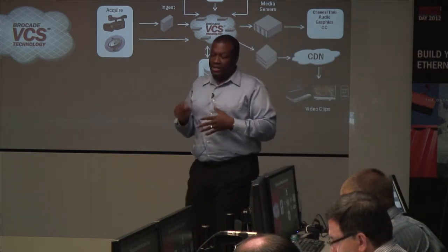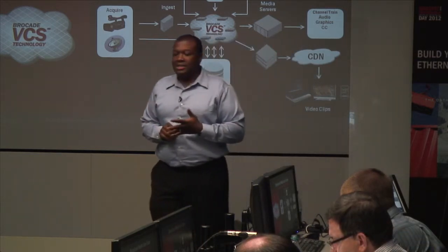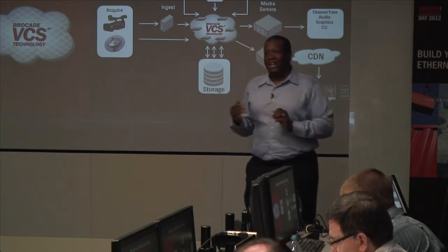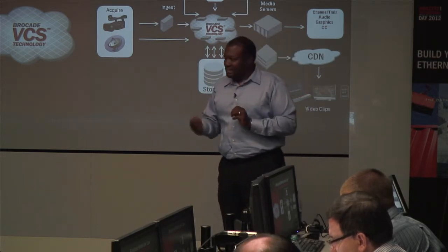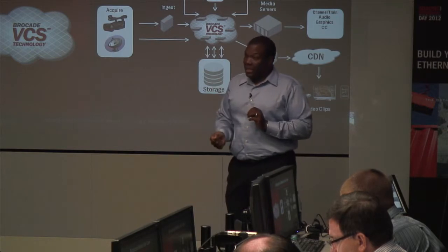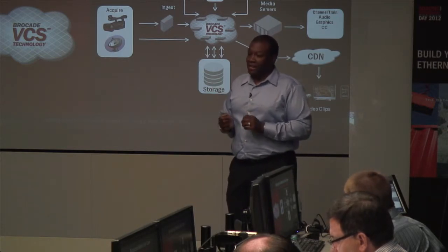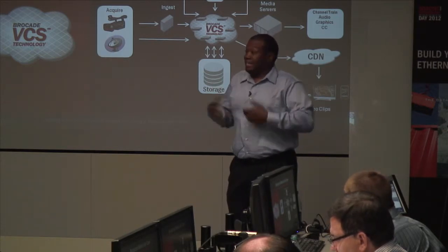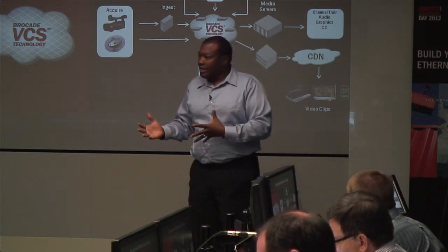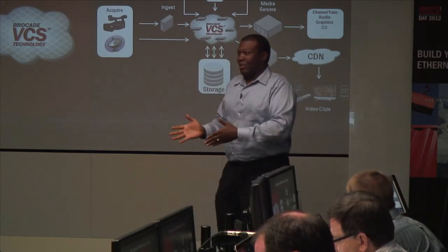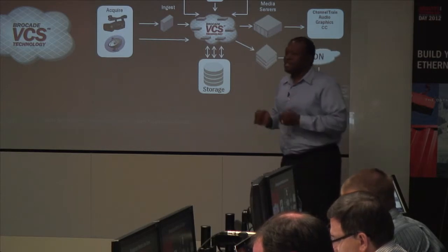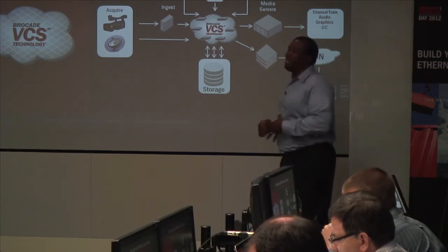The first thing they told me is there's no such thing as a black screen in their business — the screen can't go blank. So the network has to be reliable. They like a lot of redundancy built in: if there's a link outage the network automatically fails over to other links, and if there's a device outage, it automatically reroutes around that device very quickly.